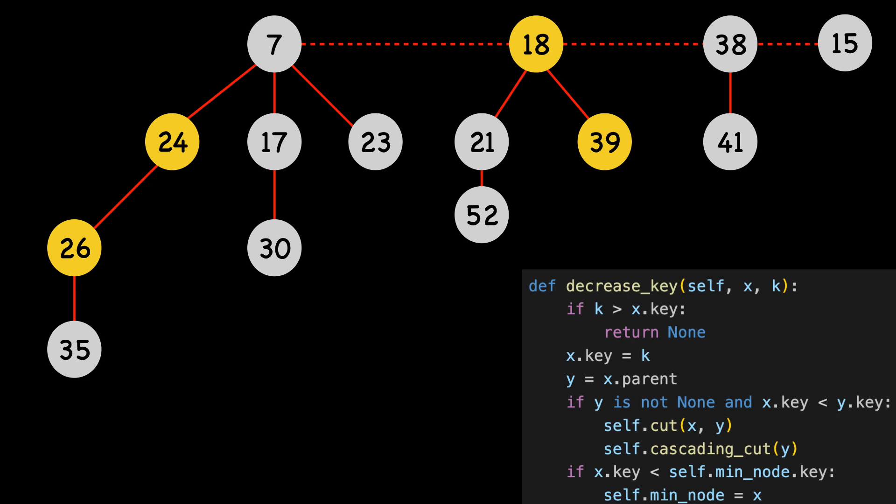Let's do one more example, this time a little more complex, as there will be multiple cascading cuts. Let's decrease node 35 to 5. I'll color 35 blue, and change this value to 5. We set Y to X's parent. I'll use a green circle to indicate Y, since it's yellow, because it's marked.